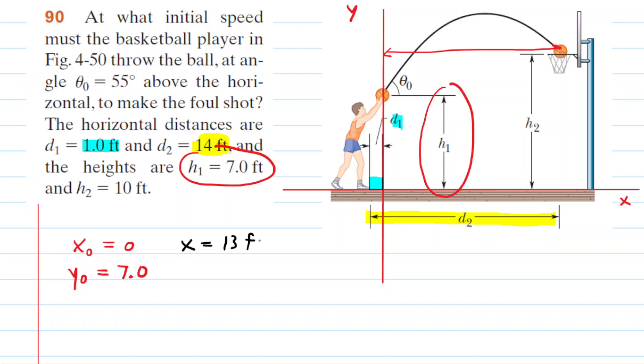The final y-coordinate of the ball is a little easier to ascertain because that's simply this height right here, this h2, which is given to us as equaling 10 feet. So the final y-coordinate of the basketball is 10 feet.